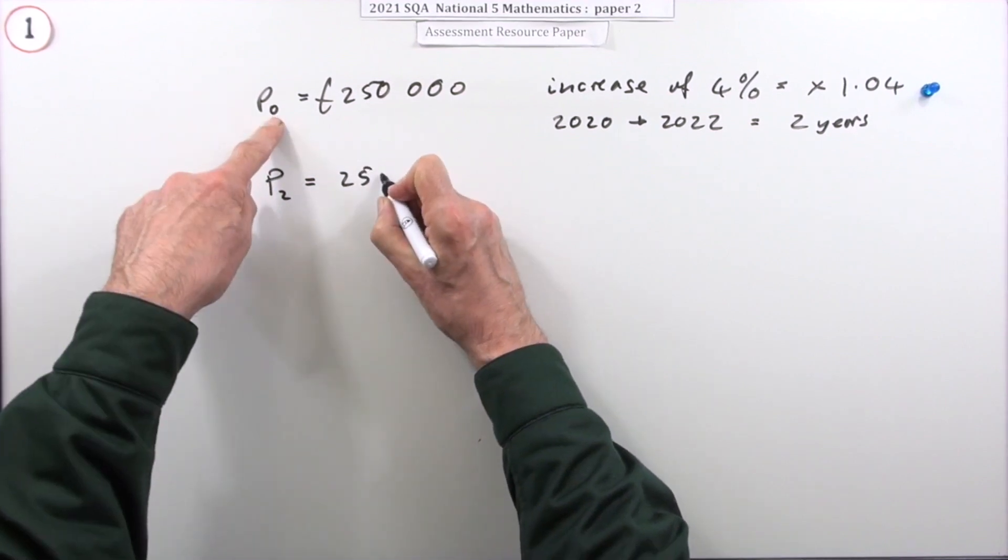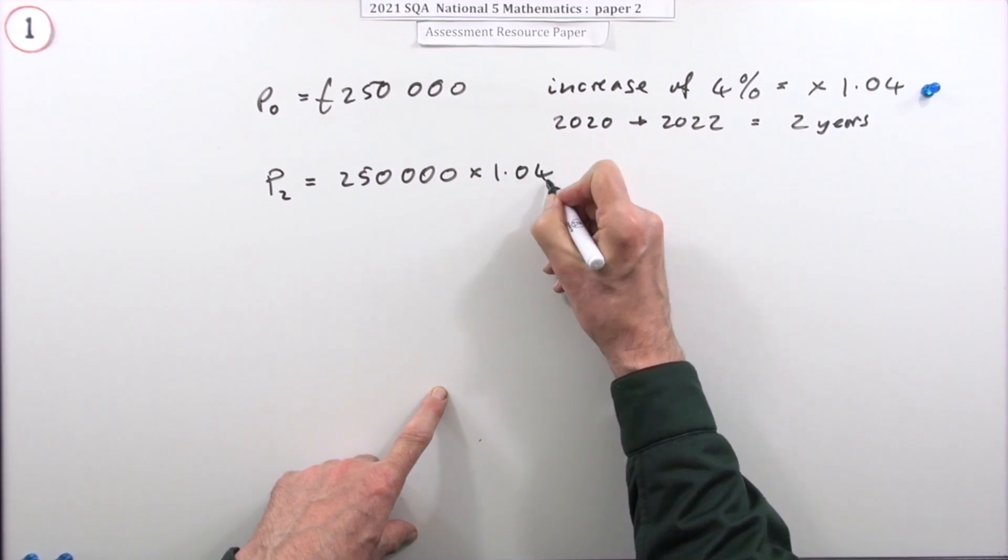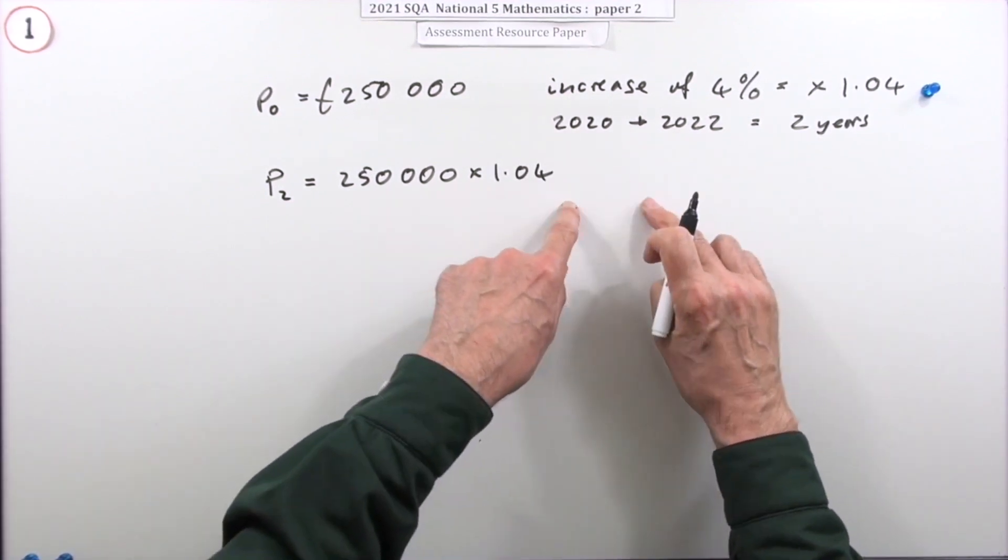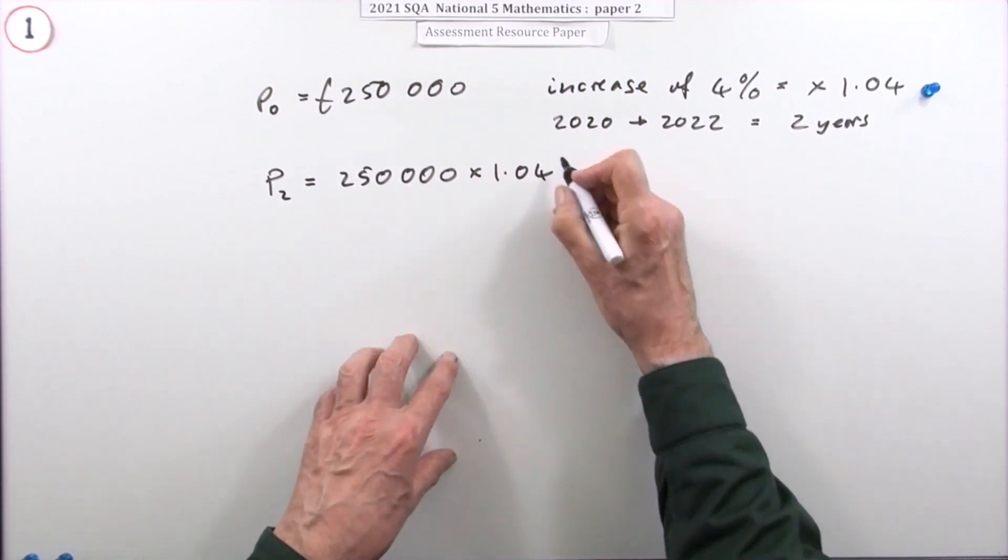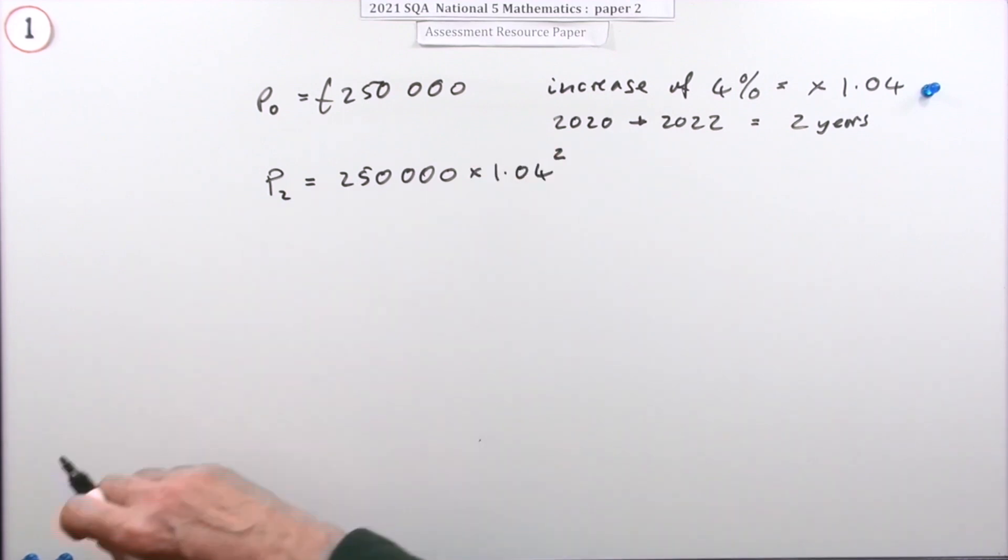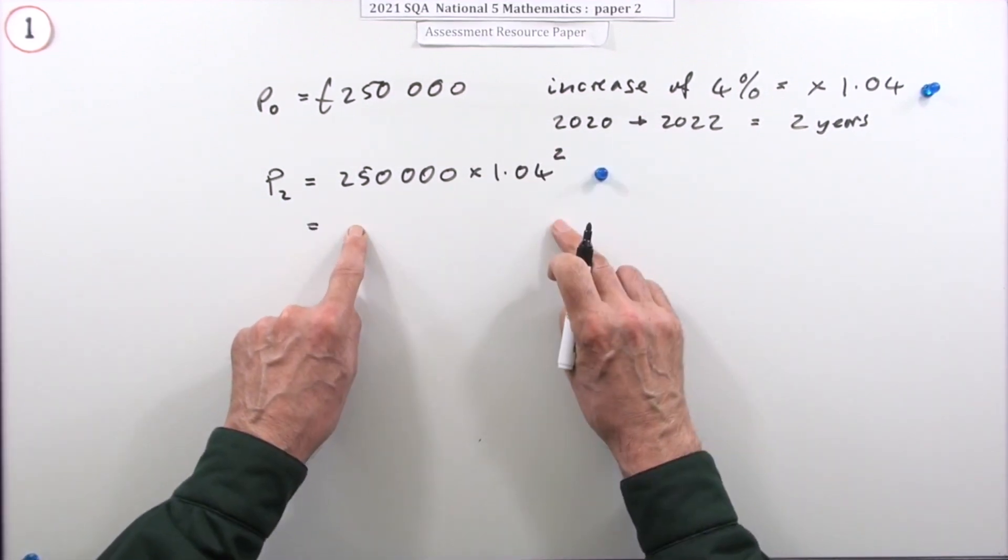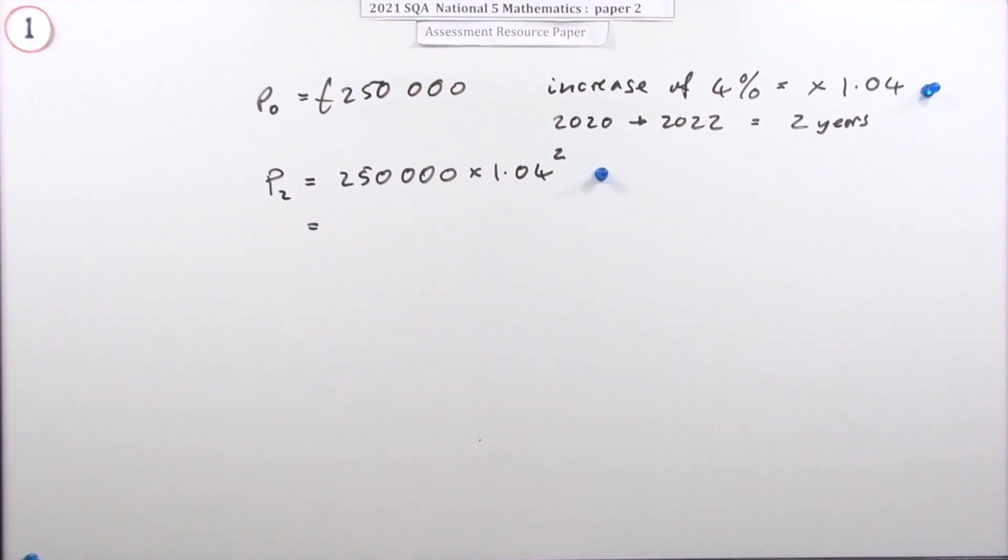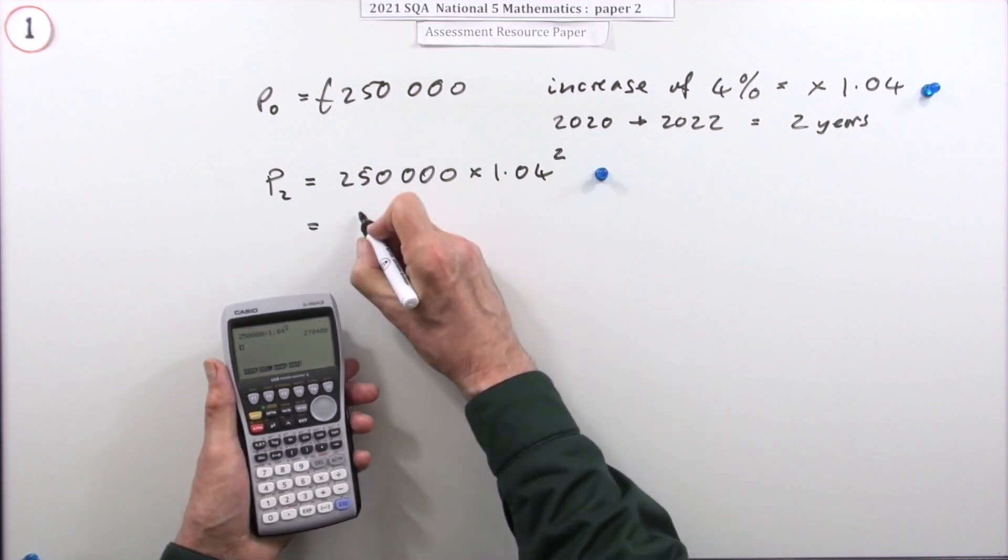What would be the price after two years? Well it would be the initial price multiplied by this factor once for every year. So for two years it'll be times 1.04 times 1.04. The simplest way to put that is 1.04 squared. Putting that down gets the next mark, and then putting that into your calculator will give you the final mark.